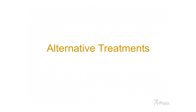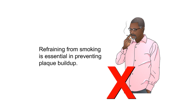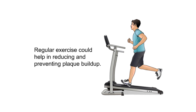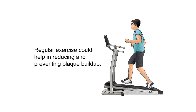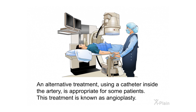Alternative treatments. A healthy low-fat diet may reduce plaque buildup. Refraining from smoking is essential in preventing plaque buildup. Regular exercise could help in reducing and preventing plaque buildup. Certain medications may also be appropriate. An alternative treatment using a catheter inside the artery is appropriate for some patients; this treatment is known as angioplasty.